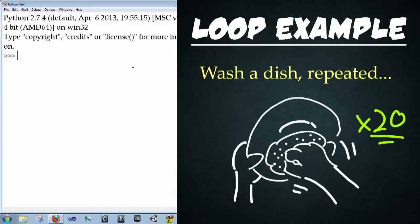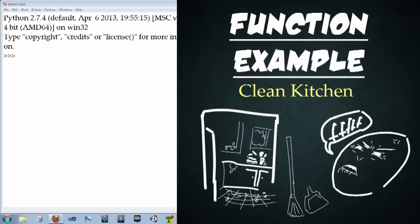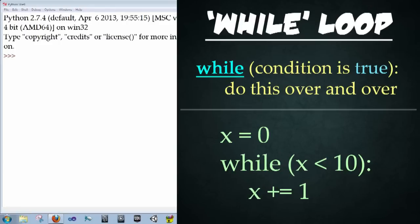A real world example of a loop would be to wash a dish. You wash a single dish, and then you grab another dish, and then you wash that one, and so on and so forth. An example of a function would be to clean the whole kitchen. It's a whole process of little actions combined into a much more neatly packaged thing. How do we use a loop?